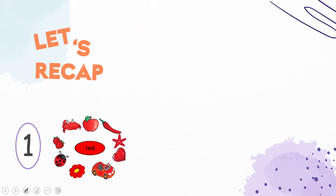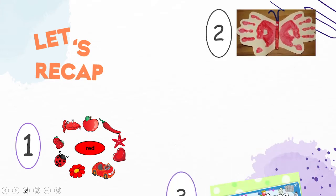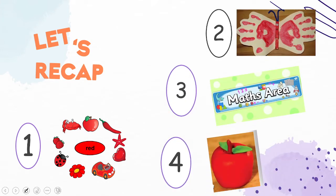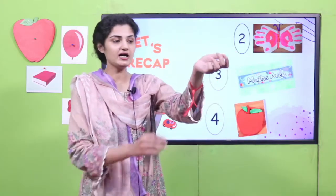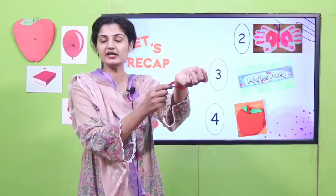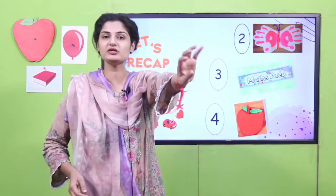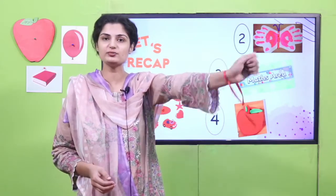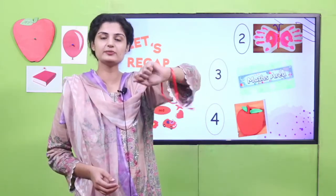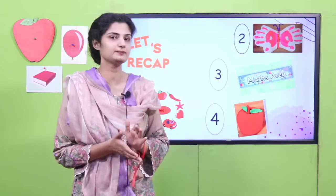Now let's start the lesson with the recap. I am showing you the things which we have done in the previous lesson. I am hoping that you are all wearing the red ribbon I asked you to tie in your first lesson. Now show me — stretch your arm and show me your ribbon. Wiggle your ribbon. Excellent, playgroup.